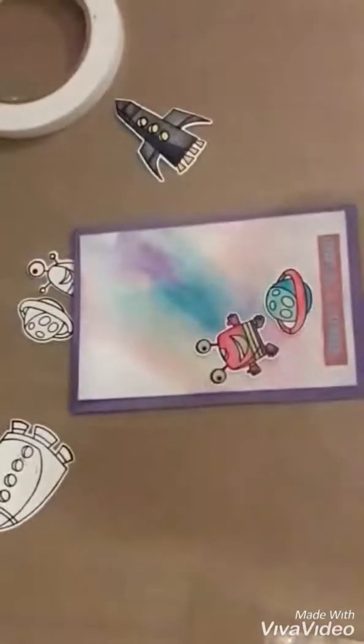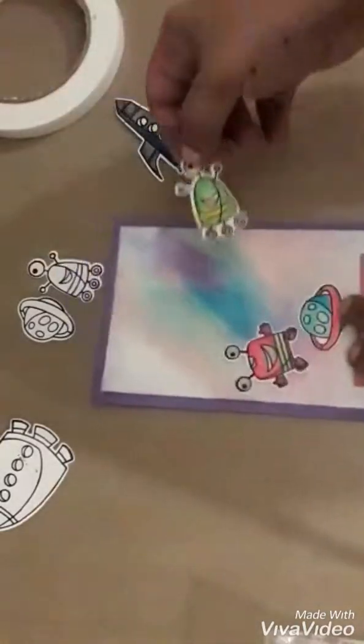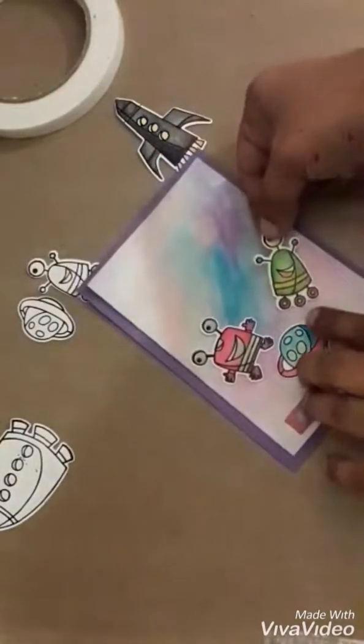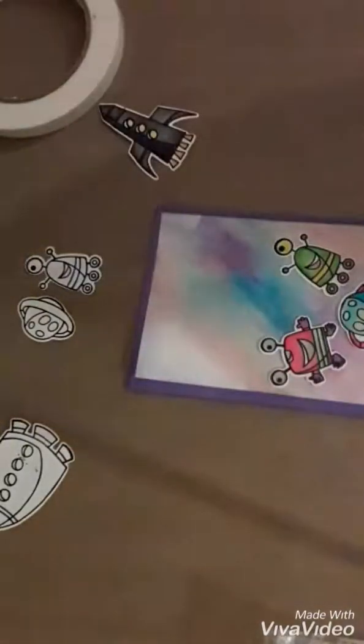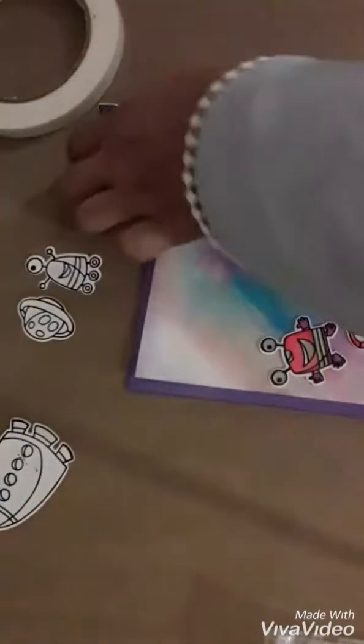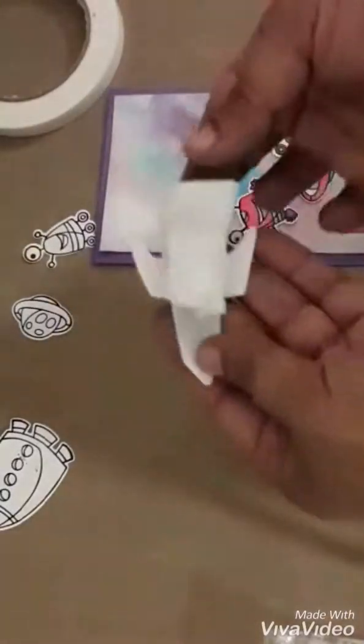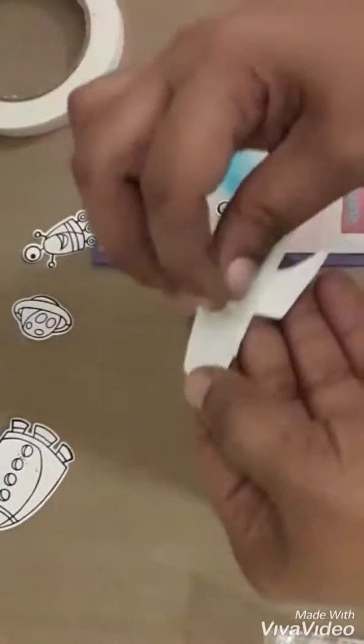I'm again using my double-sided foam tape to stick my images onto my card. I have stamped out the sentiment 'Out of This World' using Versafine ink and embossed it with sky blue embossing powder.